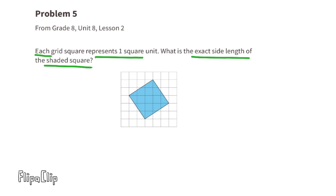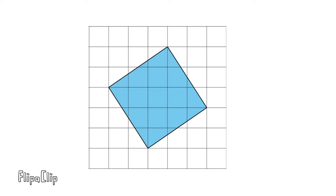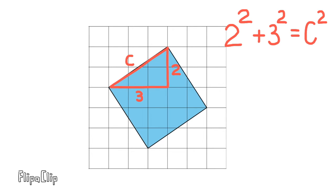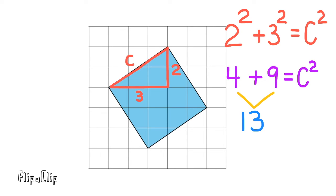Problem 5: Each grid square represents one square unit. What is the exact side length of the shaded square? I'm going to form a triangle so I can use the Pythagorean theorem: A squared plus B squared equals C squared. For this triangle, we can use 2 squared plus 3 squared equals C squared. 2 squared is 4, 3 squared is 9, and 4 plus 9 equals 13, so C squared equals 13. Therefore, the side length C must be the square root of 13.